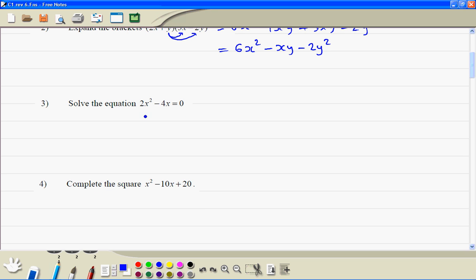Number 3, this is easy to factorize, so we factorize first. 2x is a common factor, we left x from the first term, then minus 2 from the second term.